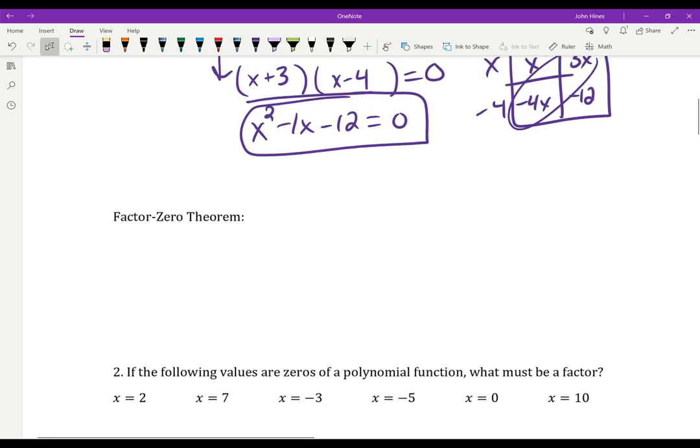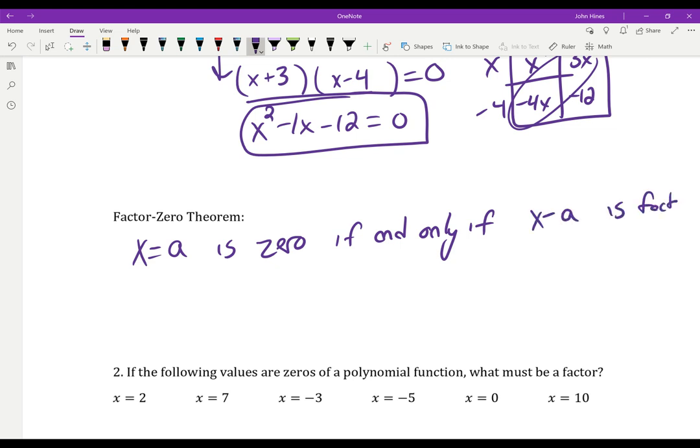So the factor zero theorem is this important relationship that says x equals a is a 0 if and only if, that means I can go both ways, x equals a is a 0 if and only if x minus a is a factor. So x equals a is a 0 if x minus a, the opposite, this binomial here, is a factor.